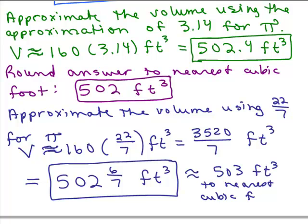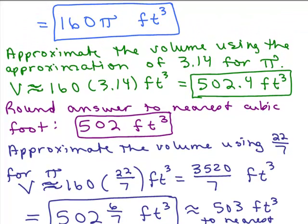If I rounded that to the nearest cubic foot. So when you start rounding and you use different approximations for π, when you round to the nearest cubic foot, it may be different. So your question is, which way should you do it? Well basically, it kind of depends on your directions. So if you're asked for an exact answer, just keep everything in terms of π. If you're asked to approximate it, then you should be given what you're going to use for your approximation.